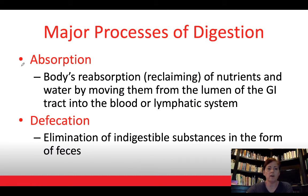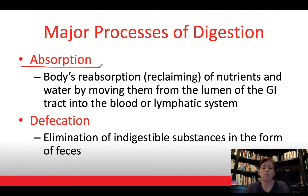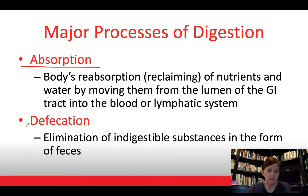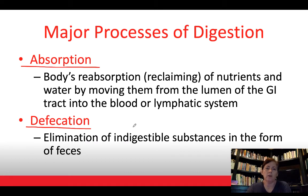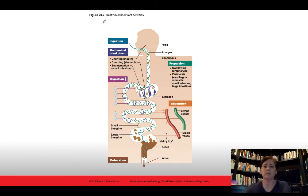Absorption is the process where our body reclaims nutrients and water — moving water and nutrients from our GI tract into the bloodstream. At the very end is defecation: elimination of substances we cannot digest, removed as feces. This overview shows all those processes and where they occur at different points along the GI tract pathway.